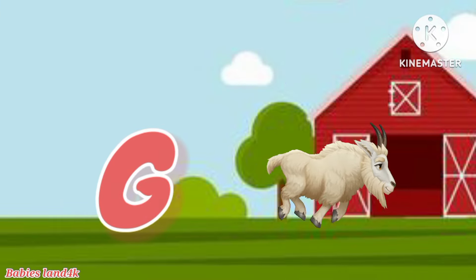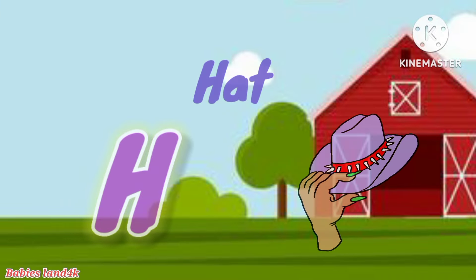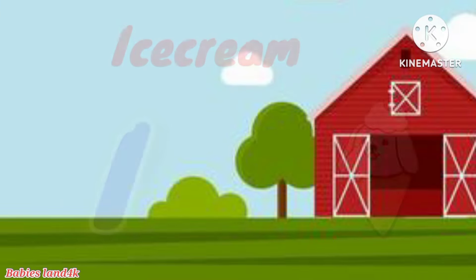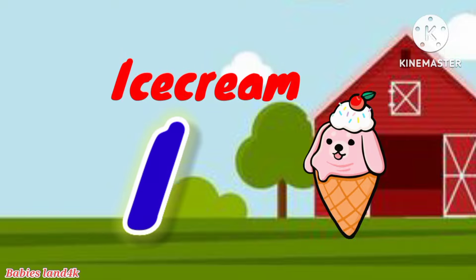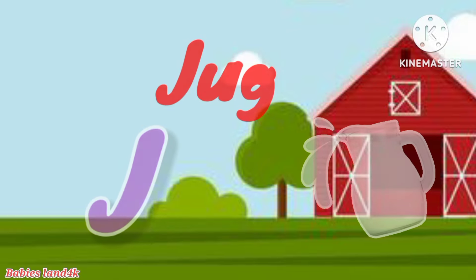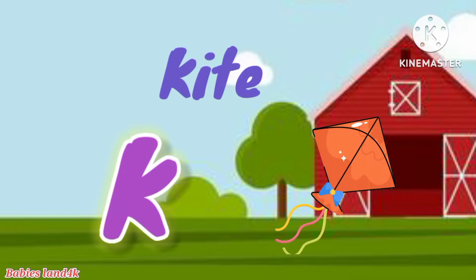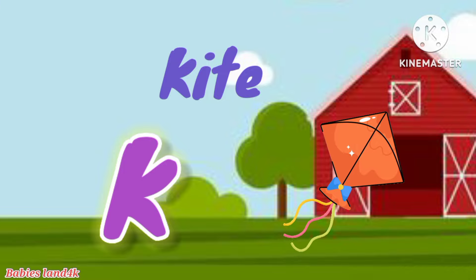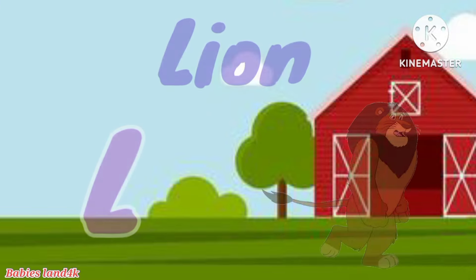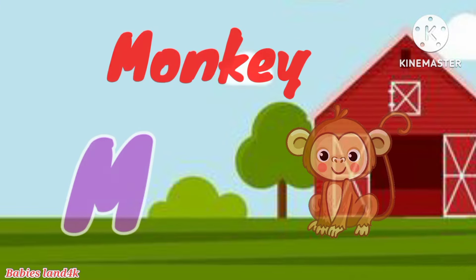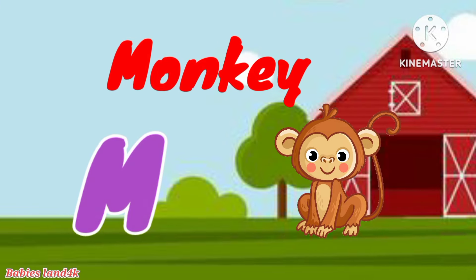G is for garden, g-garden. H is for hat, a-o-hat. I is for ice cream, a-ice cream. J is for jump, j-j-jump. K is for kite, k-k-kite. L is for lamb, b-b-lamb.